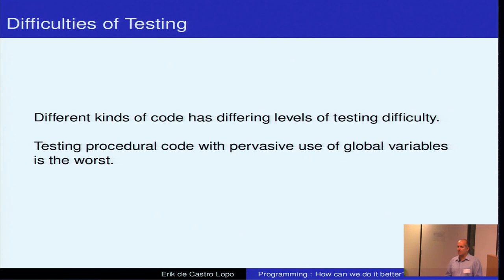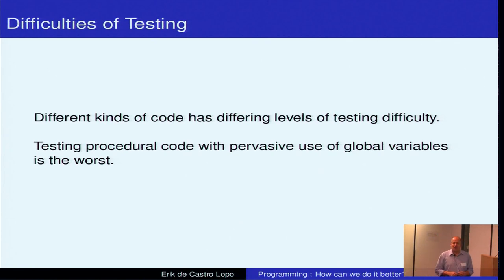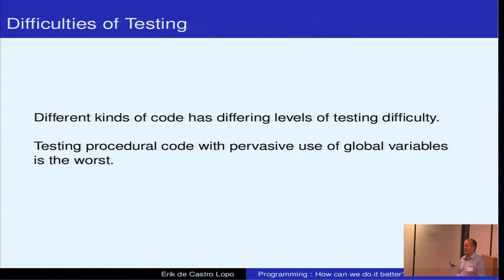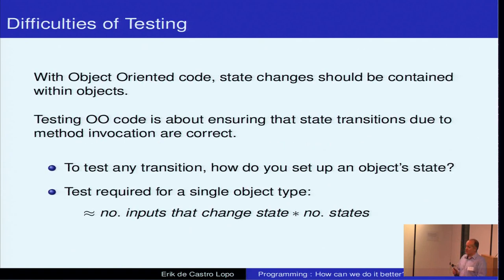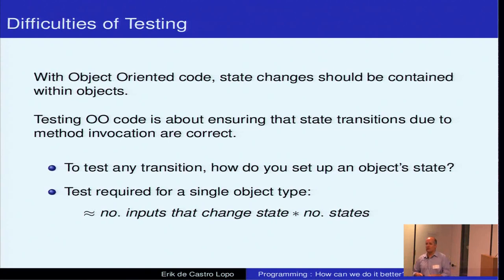Different kinds of code — programming language paradigms — have different levels of ease with which to test them. Old school procedural code where there's a whole bunch of functions and a main and a whole bunch of global data is very, very difficult to write meaningful, sane tests for. I'd actually say close to impossible for anything written in that style with any size — basically impossible to test.